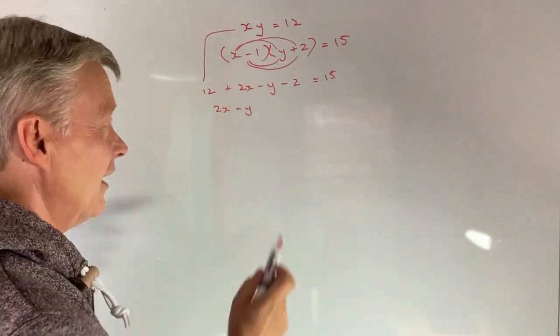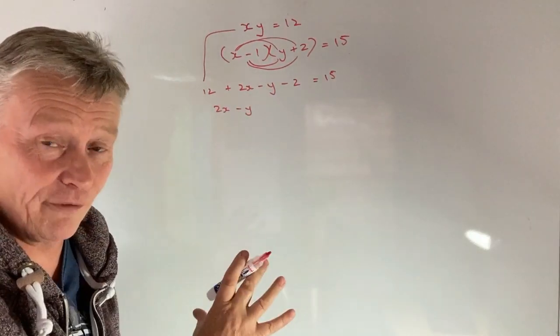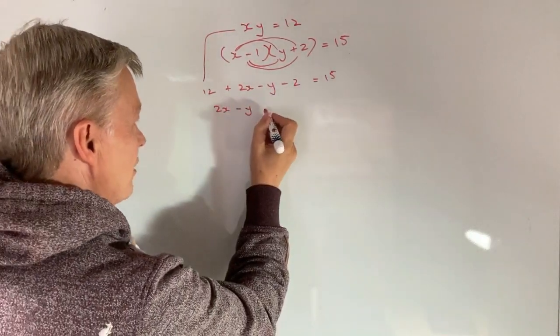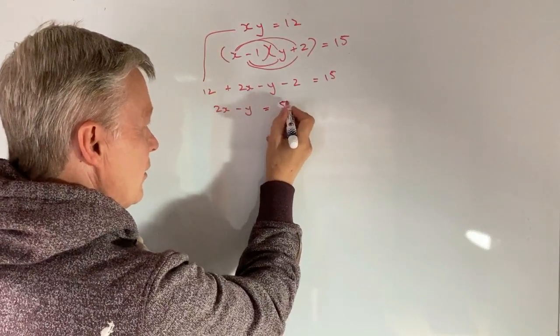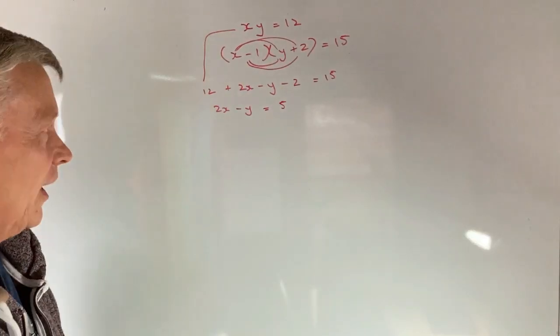Well that makes it a little bit easier now because when we tidy that up a little bit we're going to get 2x minus y and then I've got 12 minus 2. Well, that's going to be 10. So plus 10 and that's going to equal to 15.